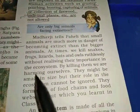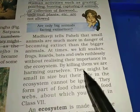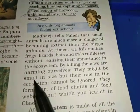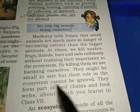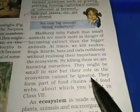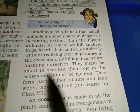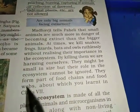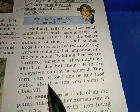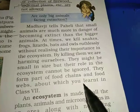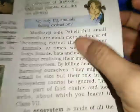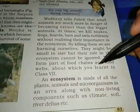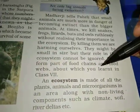By killing them, we are harming ourselves. They might be small in size, but their role in the ecosystem cannot be ignored. They form part of food chains and food webs, about which you learnt in class 7. Every animal is an integral part of food chains and food webs.